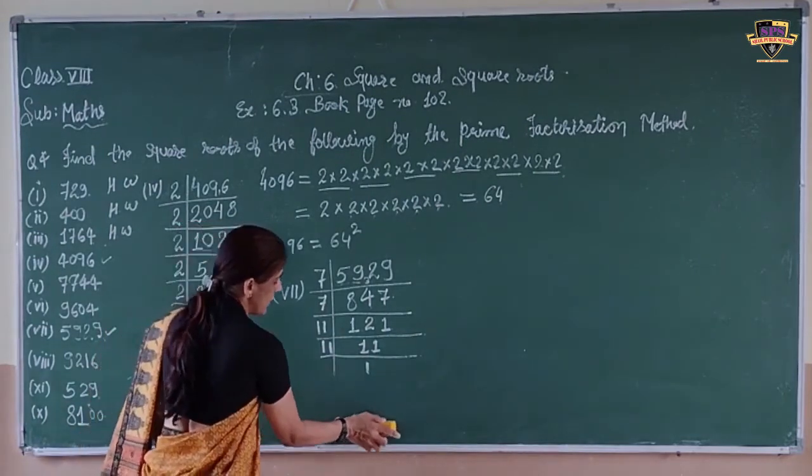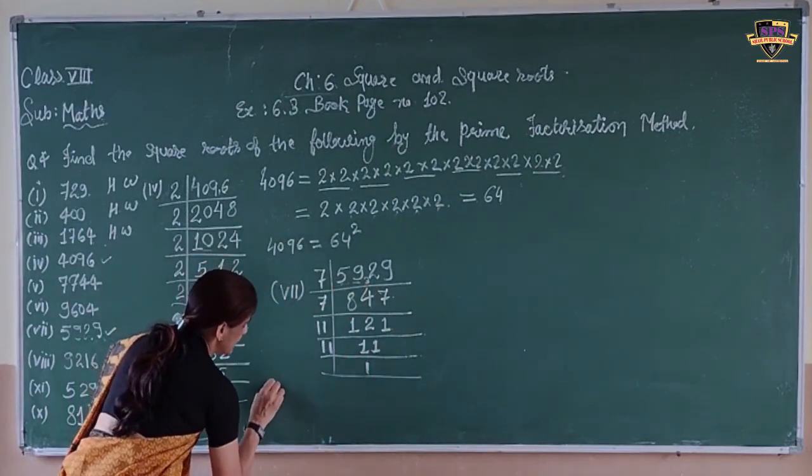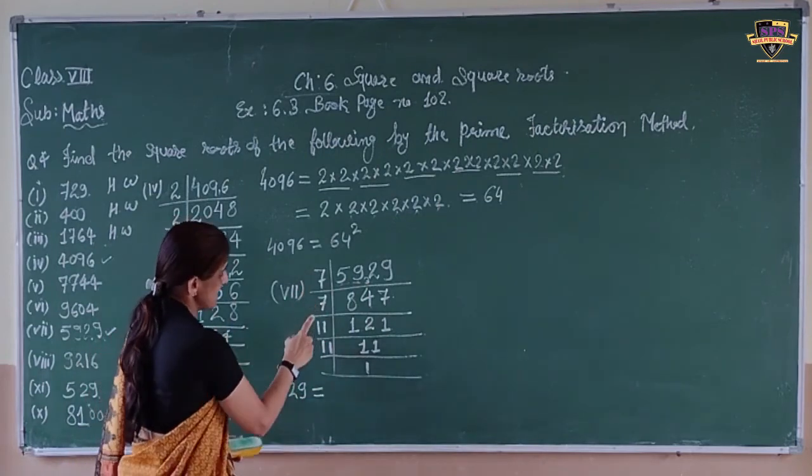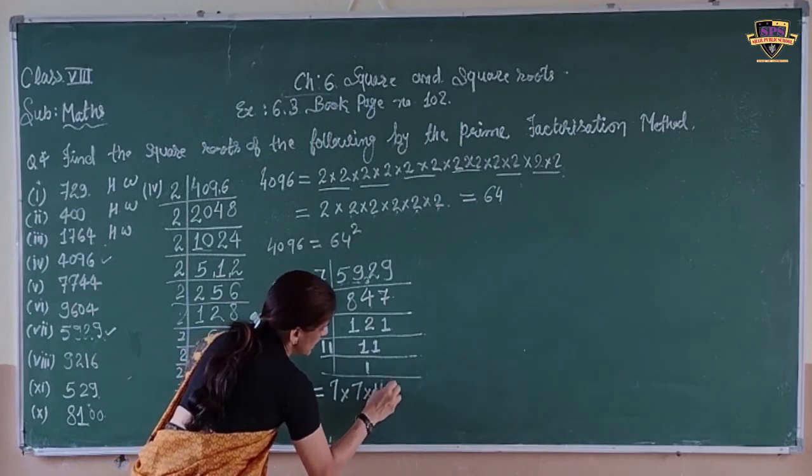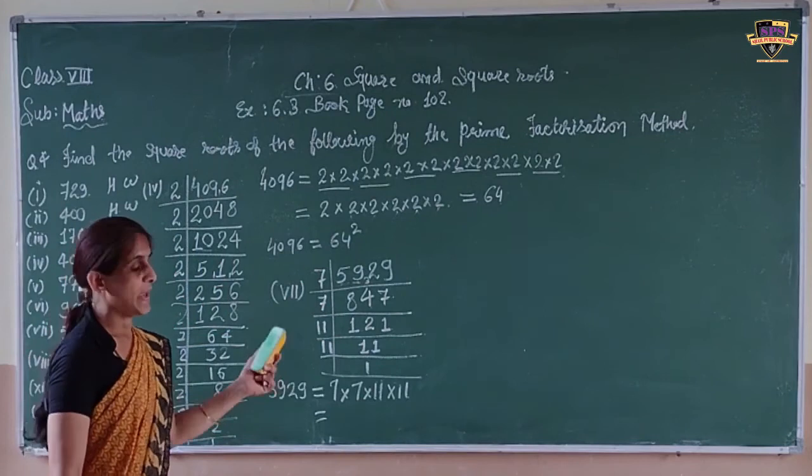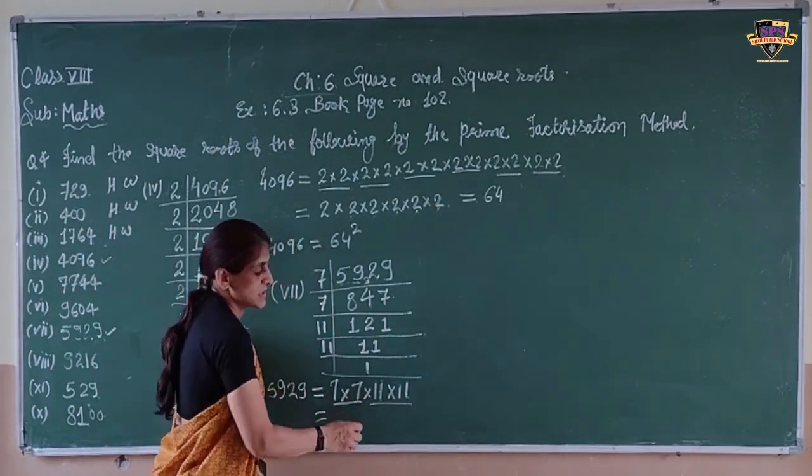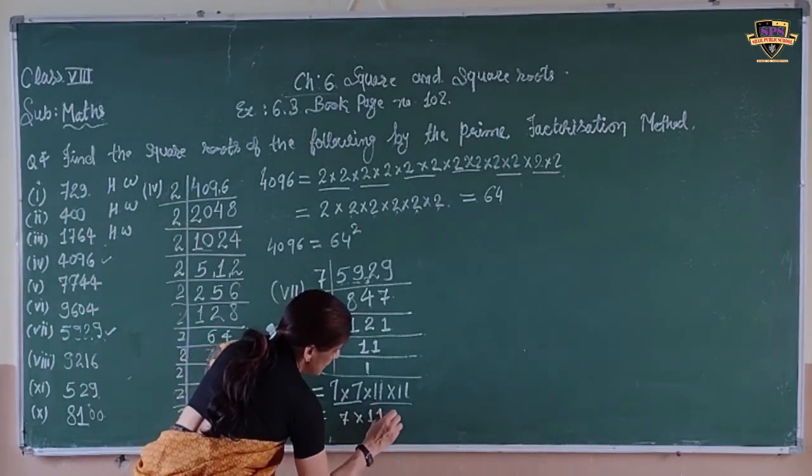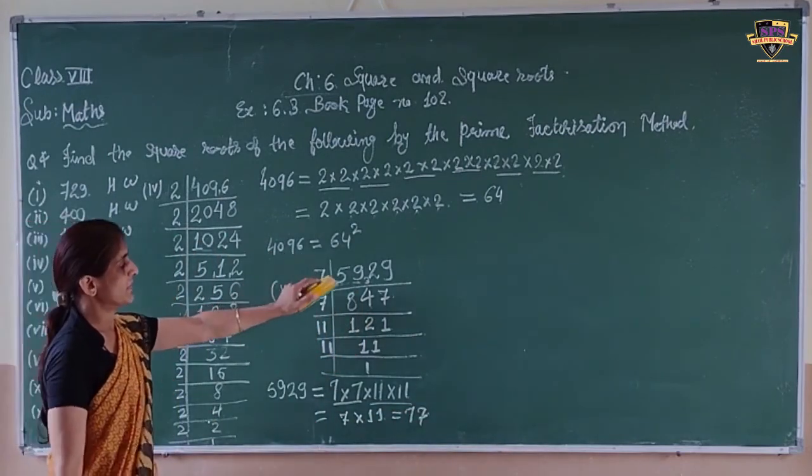Now make a pair of this: 5929 equals 7, 7, 11, 11. Make pairs: pair of 7, pair of 11. So this number 5929 is a square root of 77.